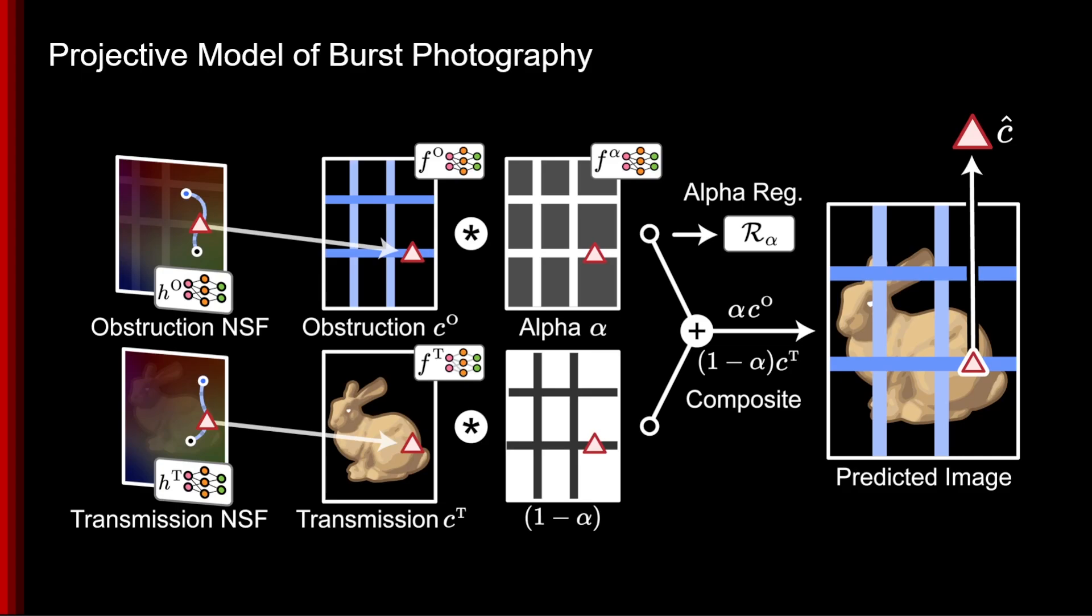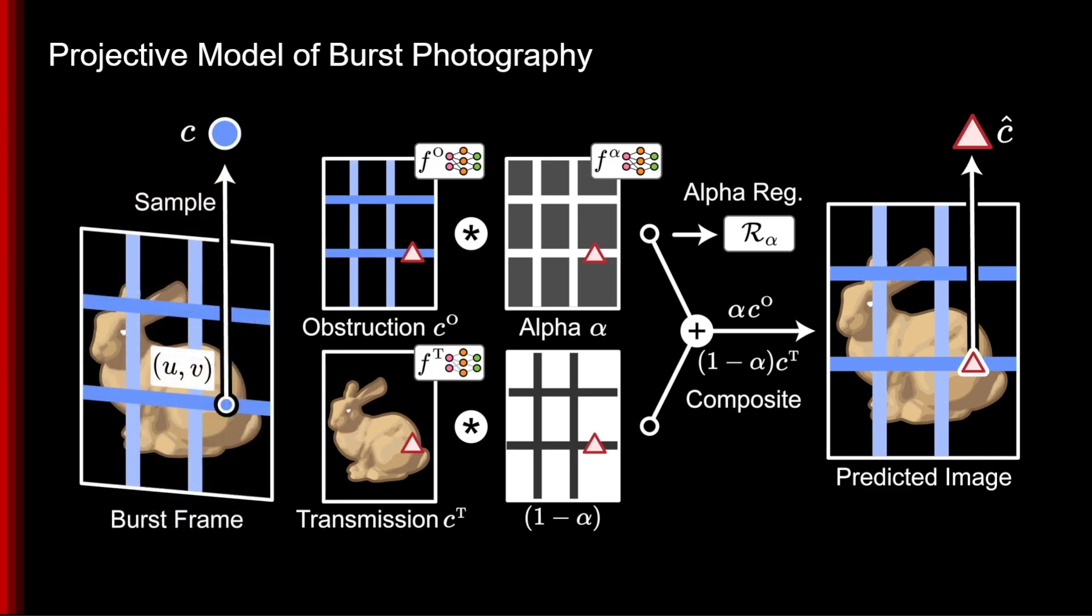Sampling the corresponding point in the predicted image and comparing to our original point from the burst frame, we calculate relative photometric error between these points and train all of the components of this model end-to-end via stochastic gradient descent.